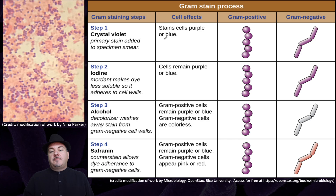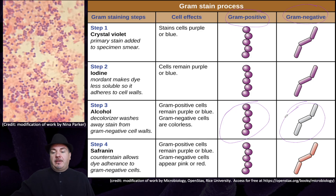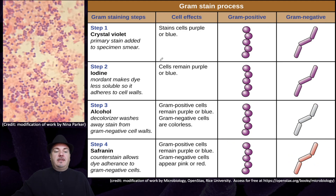During gram staining, you add crystal violet, a stain that stains the cells purple — that's the first step. Then you add iodine, which makes the dye less soluble so it adheres to the cell walls. Then the third step, you add alcohol, which washes away that purple stain from the gram-negative bacteria but does not wash away the purple dye from the gram-positive bacteria. Because the clear gram-negative bacteria can be hard to see under a microscope, you then add a counterstain, which stains the gram-negative bacteria a pink or red color. This allows you to visualize the purple gram-positive bacteria and the pink gram-negative bacteria.